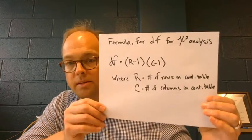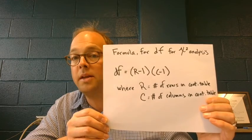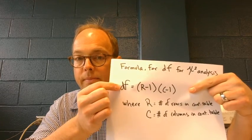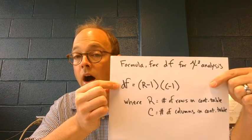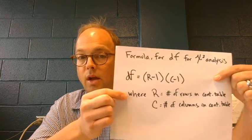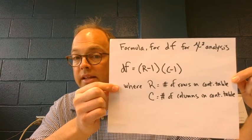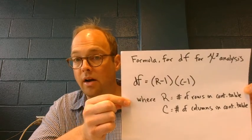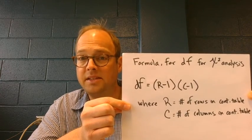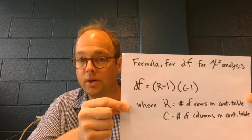The next page in your handout is the formula for degrees of freedom for chi-square analysis. Here it is: DF equals (R minus one) times (C minus one), where R equals the number of rows in our contingency table and C equals the number of columns. It's a fairly straightforward formula — the math is easy. Just remember to do what appears in the parentheses first, then multiply.